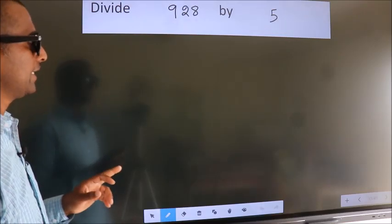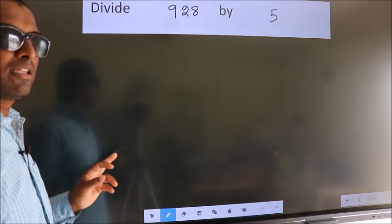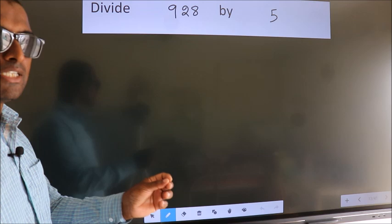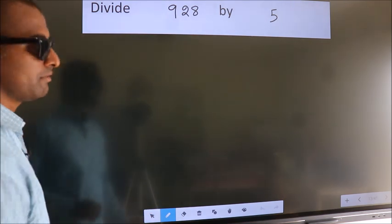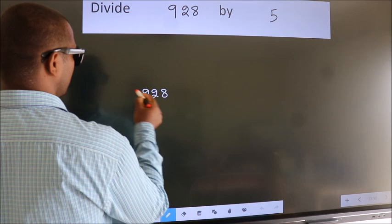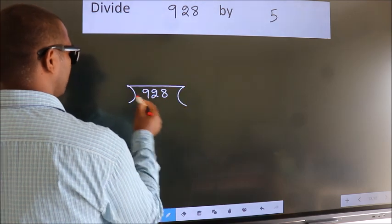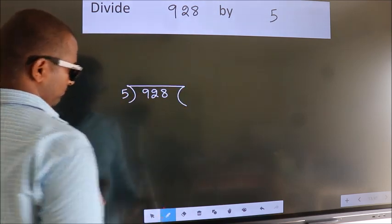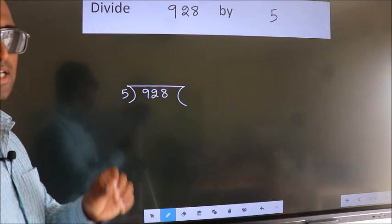Divide 928 by 5. To do this division, we should frame it in this way. 928 here, 5 here. This is your step 1.